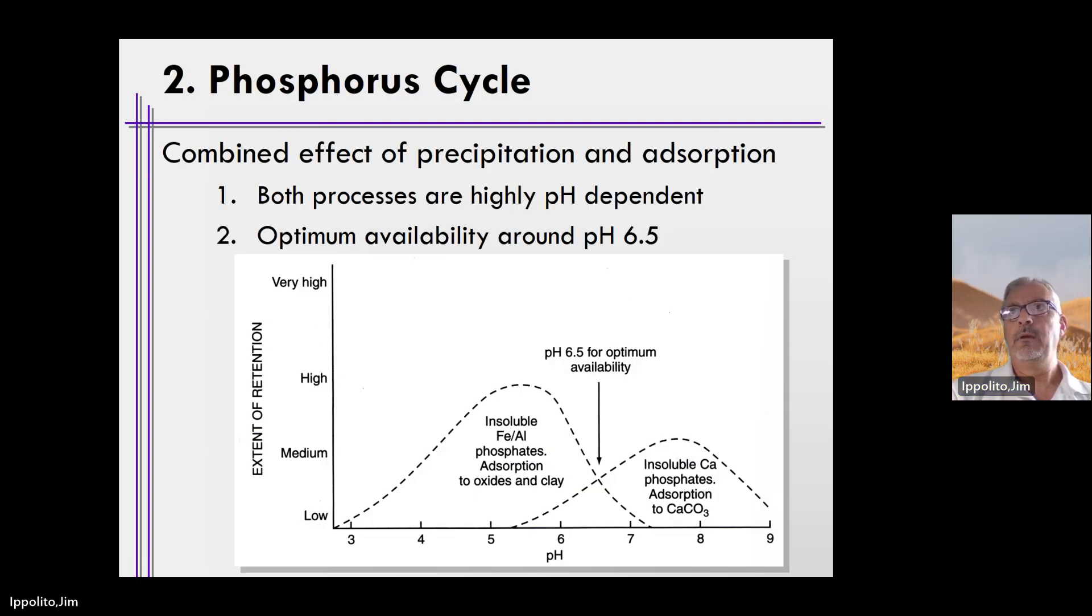Let me share with you this last figure. This figure shows you the combined effect of both precipitation reactions and adsorption reactions. We learned about adsorption reactions in the previous video. Both of the processes, adsorption and precipitation, are dependent on pH. What you see here are these curves as a function of pH—pH on the x-axis and extent of phosphorus retention on the y-axis. At pH 5.5, insoluble iron and aluminum phosphates dominate, and so does adsorption to iron and aluminum oxides and, if present, to the edges of clays, one-to-one type clays.